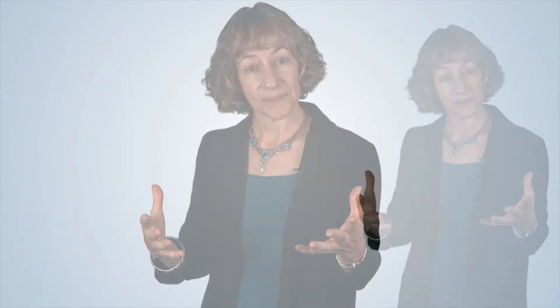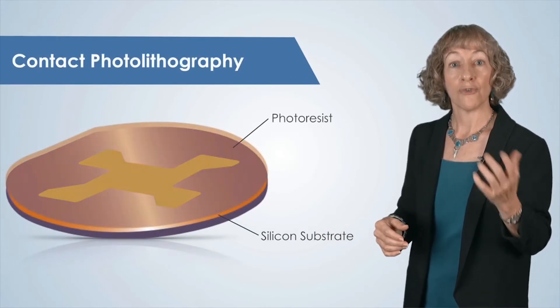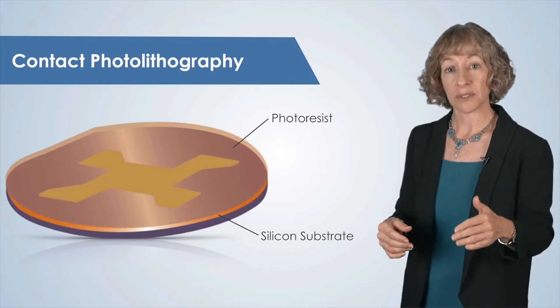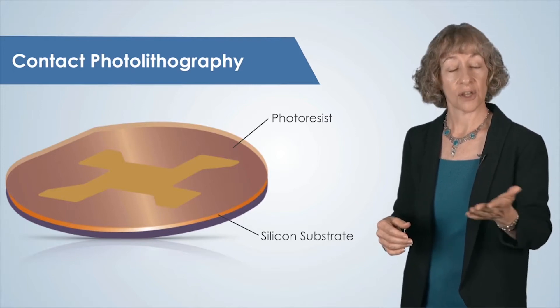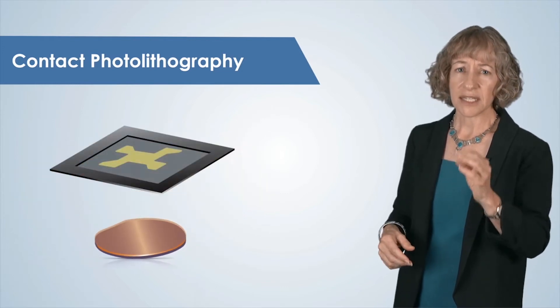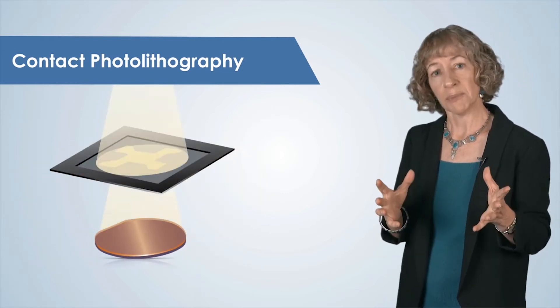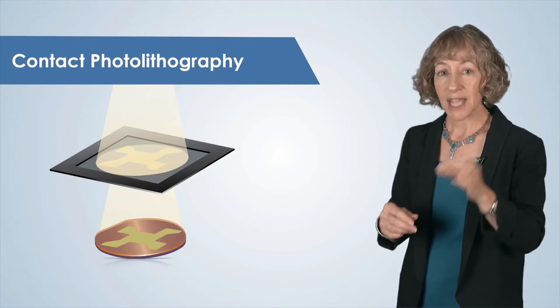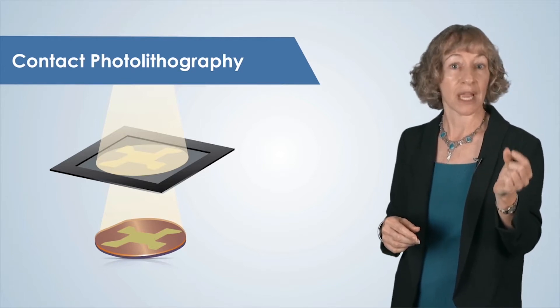To transfer the pattern from our mask onto the wafer, we use a thin polymer film that is sensitive to light. When the polymer is exposed to light through our mask, the polymer is patterned by the light. This light-sensitive polymer is called photoresist. The particular type of photolithography that we will discuss is called contact photolithography. Contact photolithography is typically used to pattern shapes that are as large as a few centimeters in size, down to about one micrometer, or we say one micron.